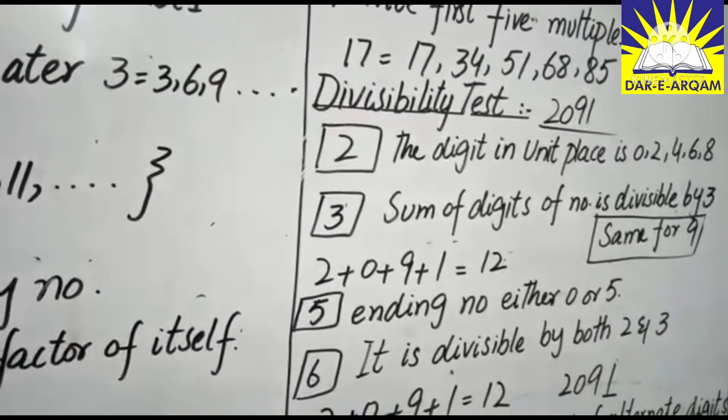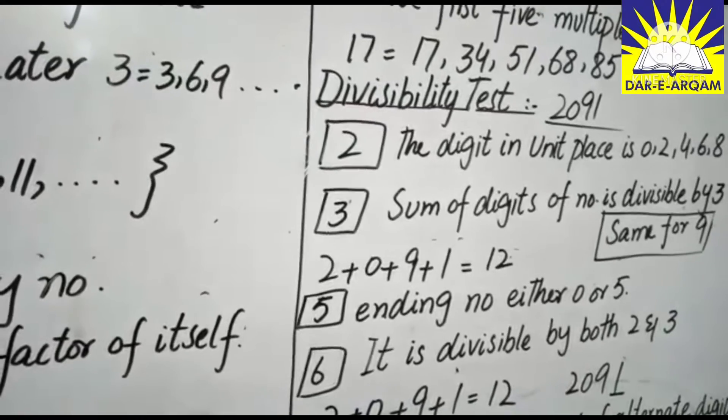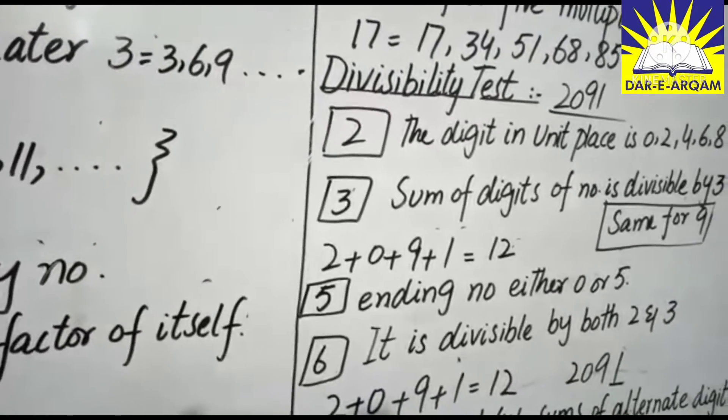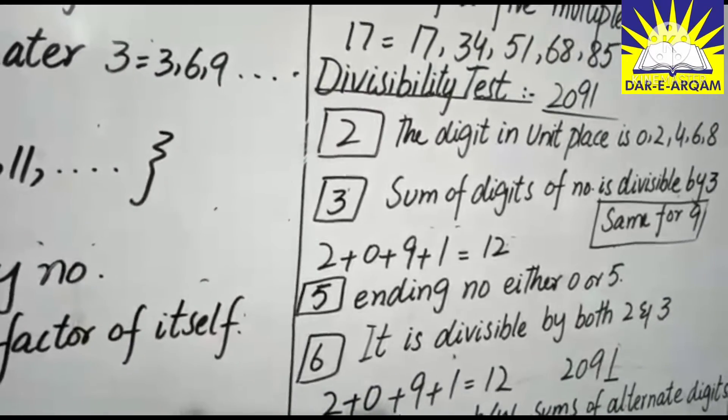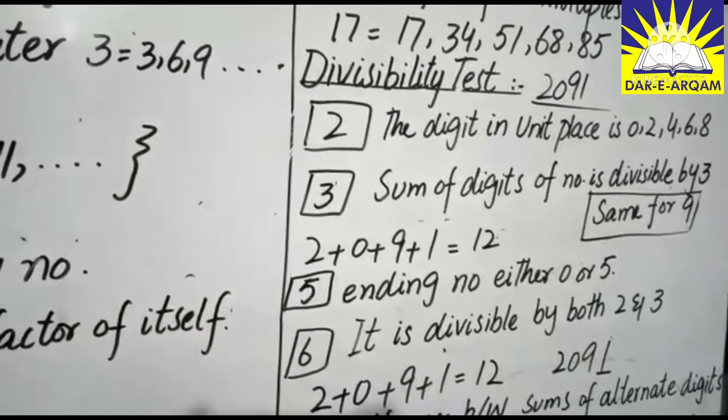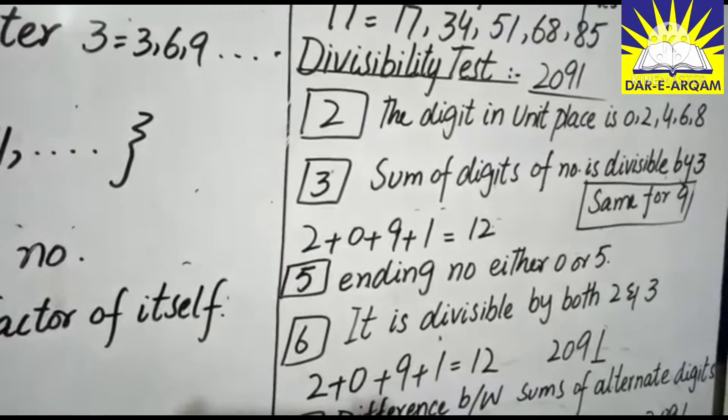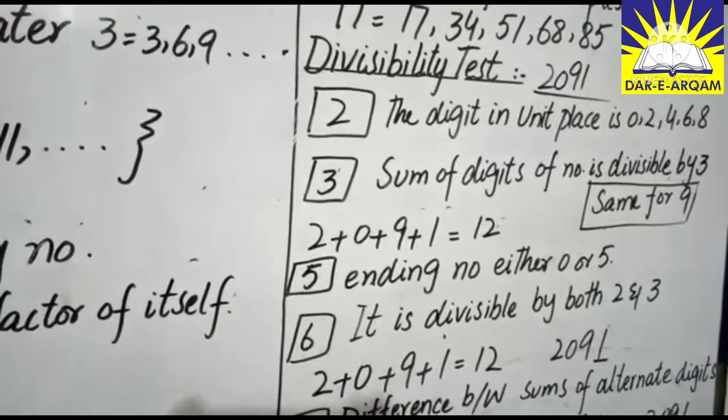We check divisibility by 2, by 3, by 5, 6 and 11. If divisible by 2, then students, the digit in unit place is 0, 2, 4, 6 and 8.